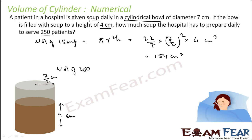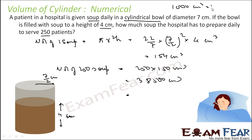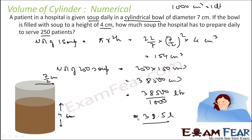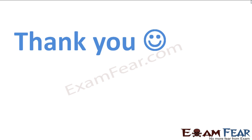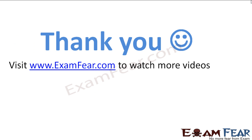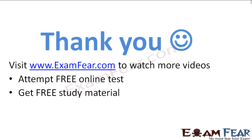Volume of soup for 250 patients = 250 × 154 = 38500 centimeter cube. Converting to liters: 38500 ÷ 1000 = 38.5 liters. You can also get access to free study materials and free tutors and mentors on examfier.com. Thanks for watching.